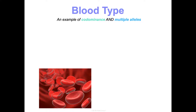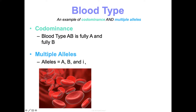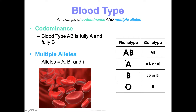Blood type is an example of both codominance and multiple alleles. Codominance: blood type AB is fully A and fully B. Multiple alleles means more than two versions of a gene exist. For blood type there are three alleles: dominant A, dominant B, and recessive little i. For phenotypes — type AB has genotype AB; type A is either homozygous AA or heterozygous Ai; type B is BB or Bi; and type O is the homozygous recessive ii.